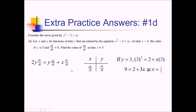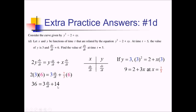Plugging everything in: 2 times 3 times 6 equals 3 times dx over dt plus 7 thirds times 6. The left side is 36. On the right, 6 and 3 reduce to 2, giving 14. Subtracting 14 leaves 22, then dividing by 3 gives dx over dt equals 22 thirds.